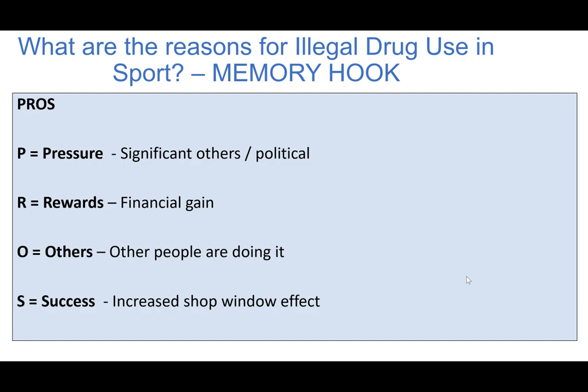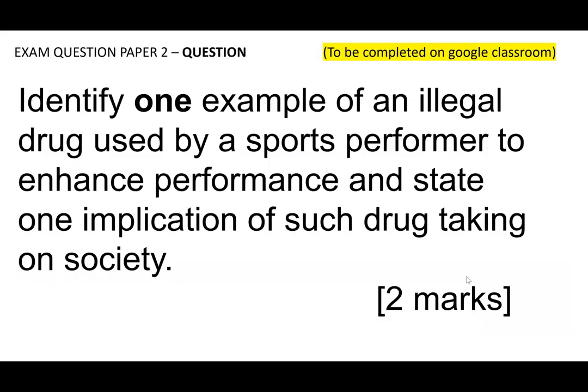Now for your question — this is a Paper Three question. Identify one example of an illegal drug used by sports performers to enhance performance, and state one implication of such drug use on society. That's two marks: one for identification and one for the implication.